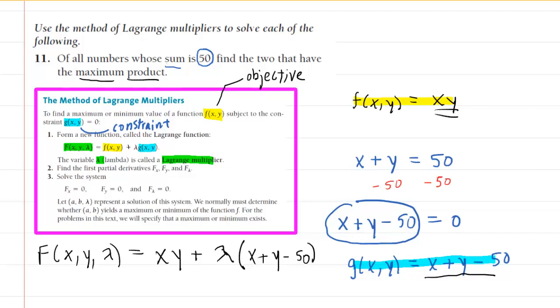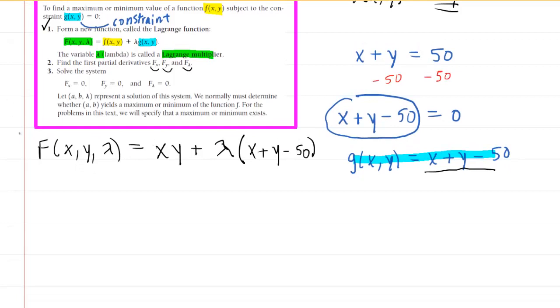That would complete step one of this process. We can move on to step two and we can see that we need to find the first partial derivatives. We need the partial derivative with respect to x, with respect to y, and with respect to lambda. Now to do that, we may find it useful to first take our uppercase F function and distribute the lambda into the parentheses. It's not necessary to do this, but most students would find this to be a helpful maneuver. So capital F of xy lambda would now be xy plus lambda x plus lambda y minus 50 lambda.